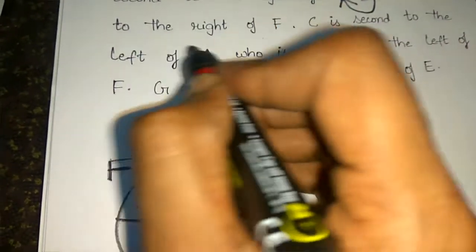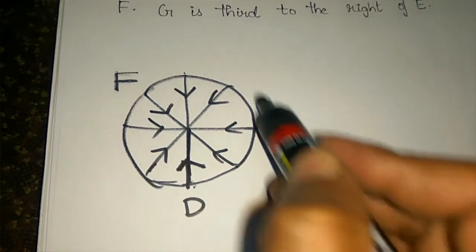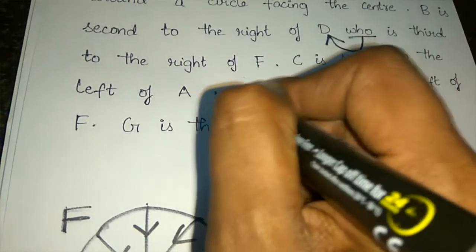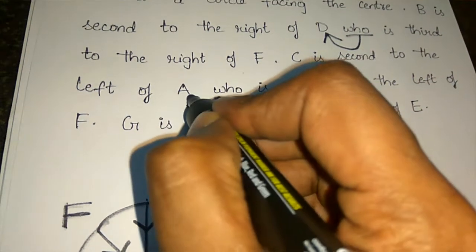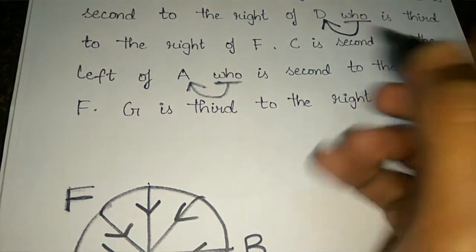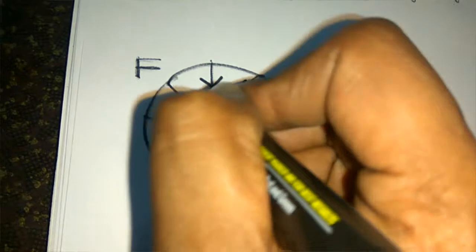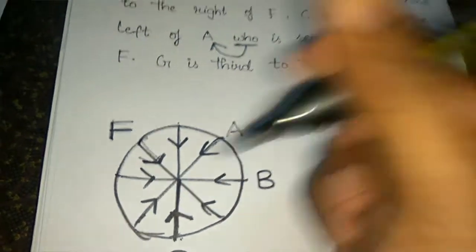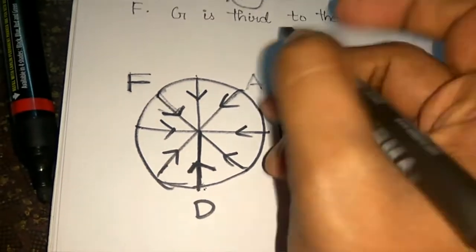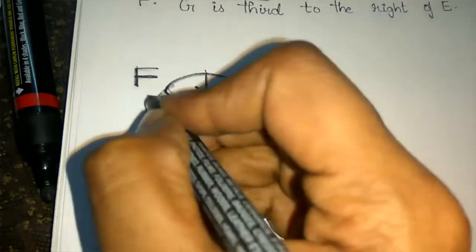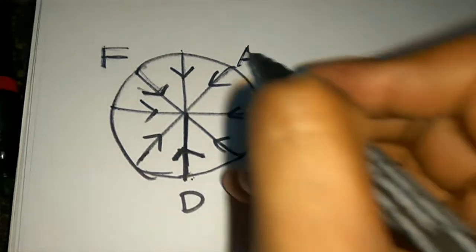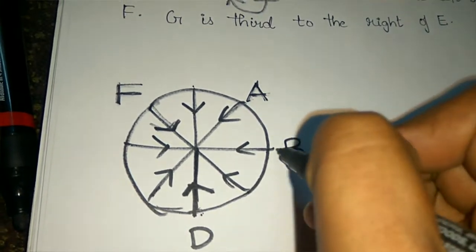Next clue: C is second to the left of A. Starting from A, going left — first left, second left — that position is C. So A is placed, first left of A is one position, and second left of A is C. We assign these positions on the circular diagram.